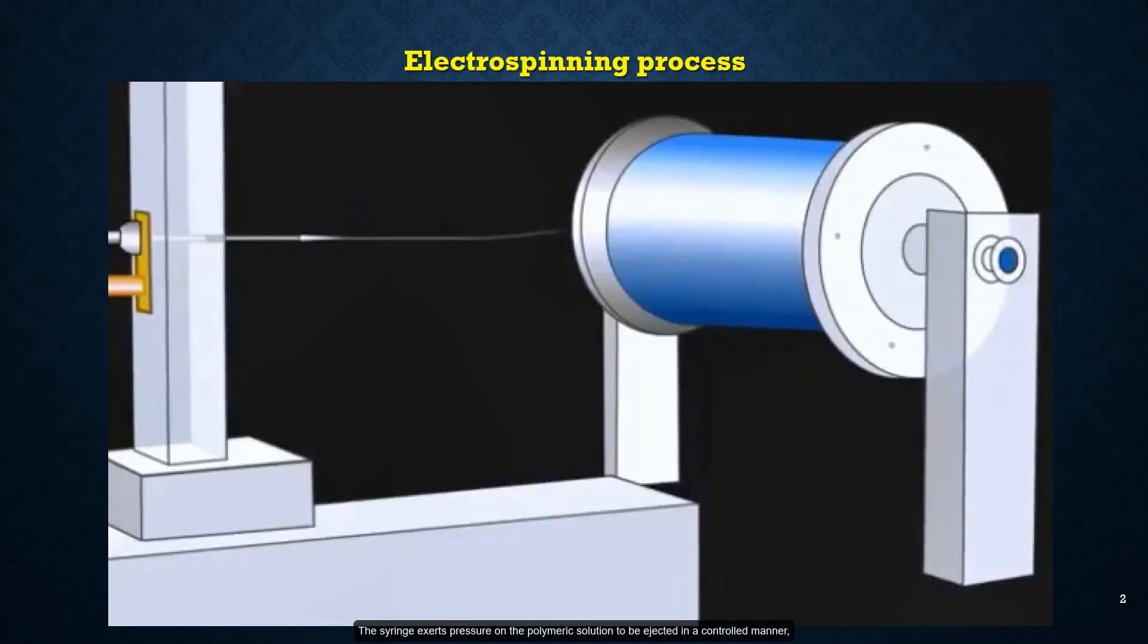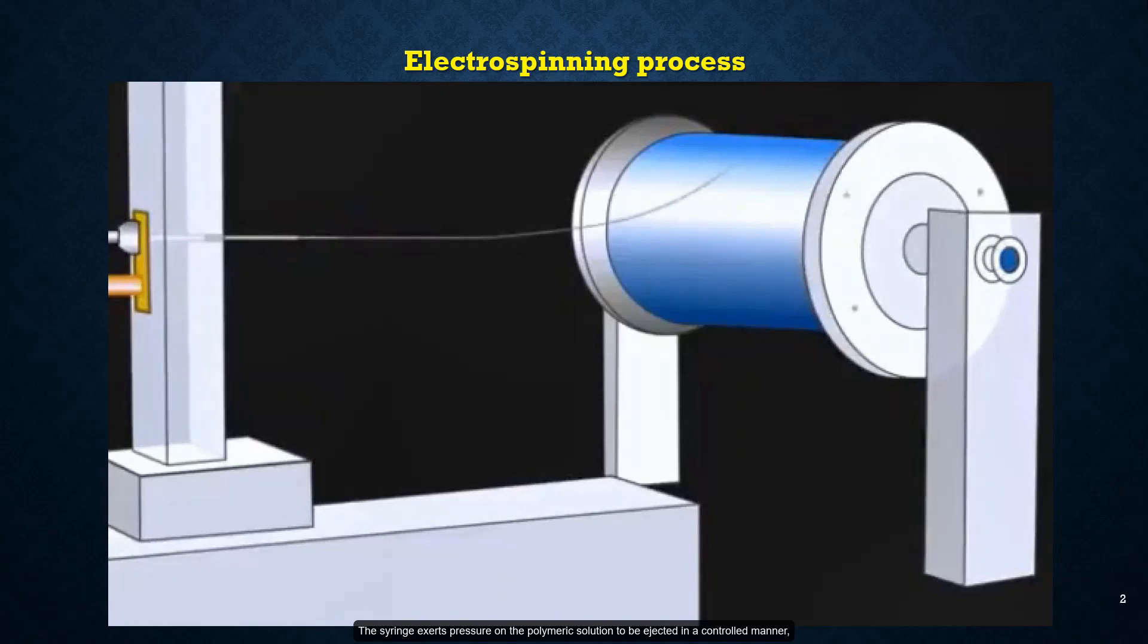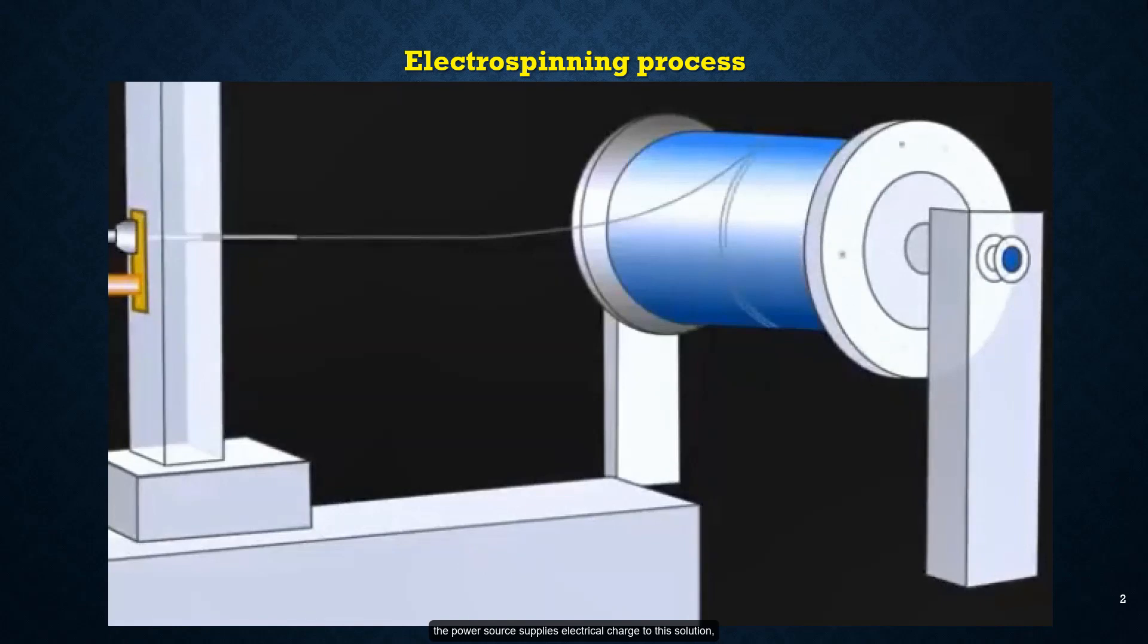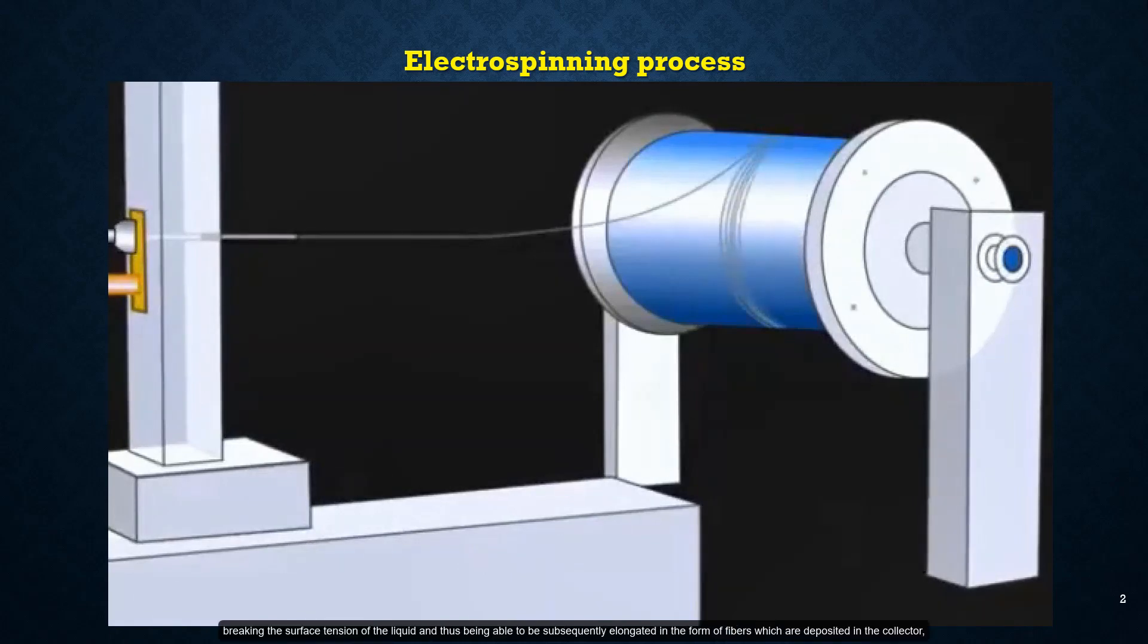The syringe exerts pressure on the polymeric solution to be ejected in a controlled manner. The power source supplies electrical charge to the solution, breaking the surface tension of the liquid, and allowing it to be subsequently elongated in the form of fibers which are deposited in the collector, which is located at a certain distance from the needle. In the fiber formation process...